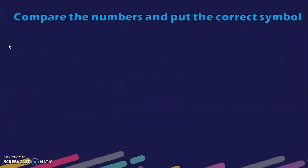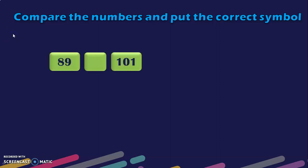Now that we have learnt all the rules for comparison of 3-digit numbers from 100 to 200, let us do some exercises. Compare the numbers and put the correct symbol. Here I have given a 2-digit number 89 and 101, which is a 3-digit number. We know that a 2-digit number is lesser than a 3-digit number, so you put the lesser than symbol.